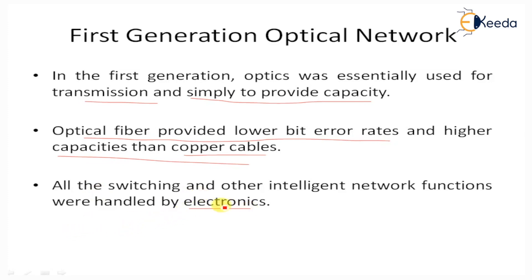First generation optical networks use optical fiber as the transmission medium. It is just a replacement for copper cable for transmission at higher bit rates over a longer distance.